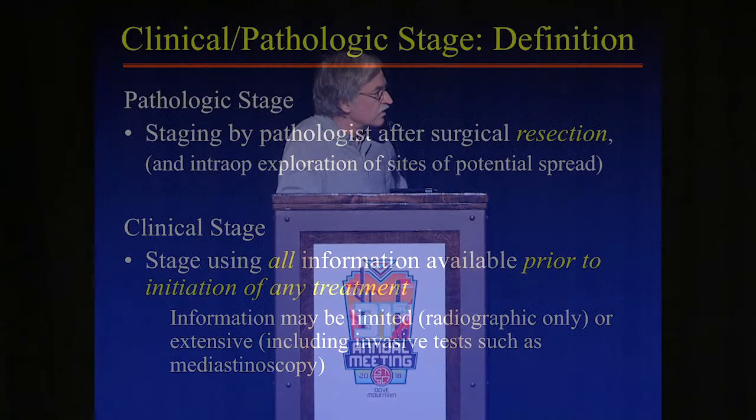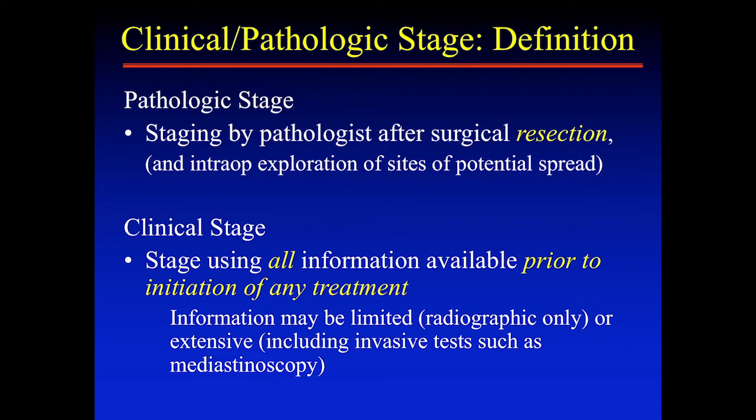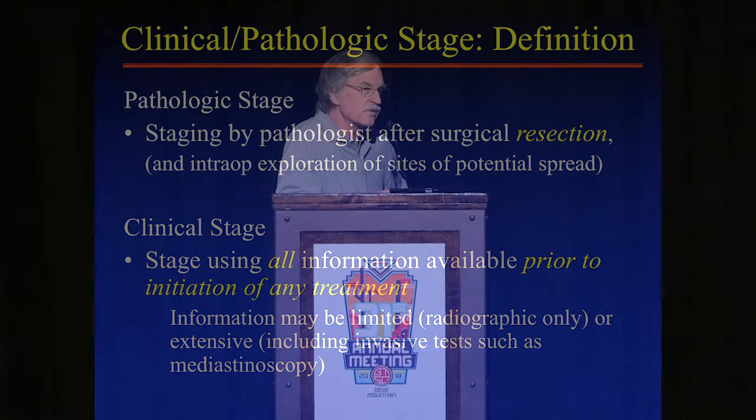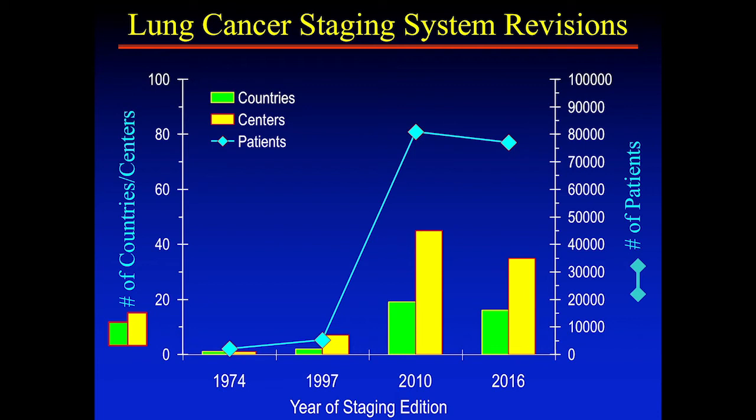I want to emphasize a point that often gets missed: clinical staging is all information prior to any treatment; pathologic staging is only after you've done a resection. If you do immediate bronchoscopy, it's a surgical procedure with a path report, but it's still part of clinical staging. The earlier editions of the staging system were based on very limited numbers of patients, but starting around 1996 and the current edition are based on far more patients and a large global database.